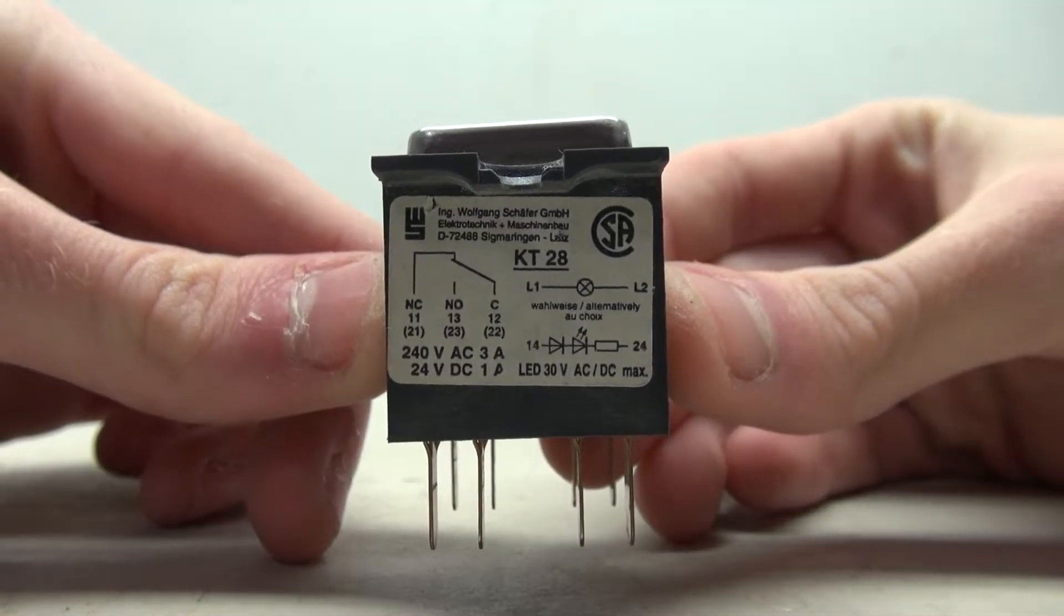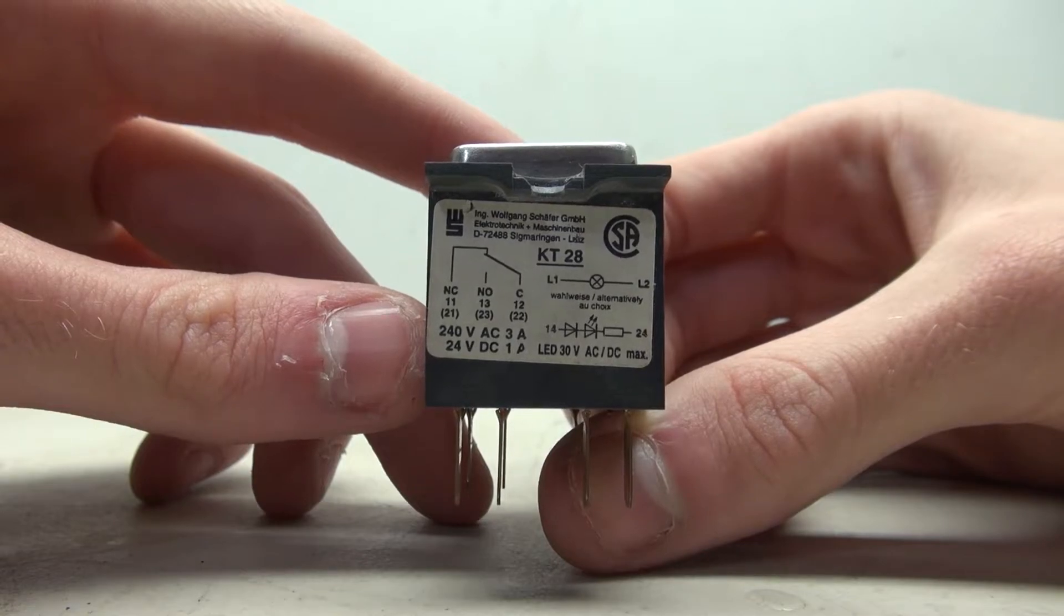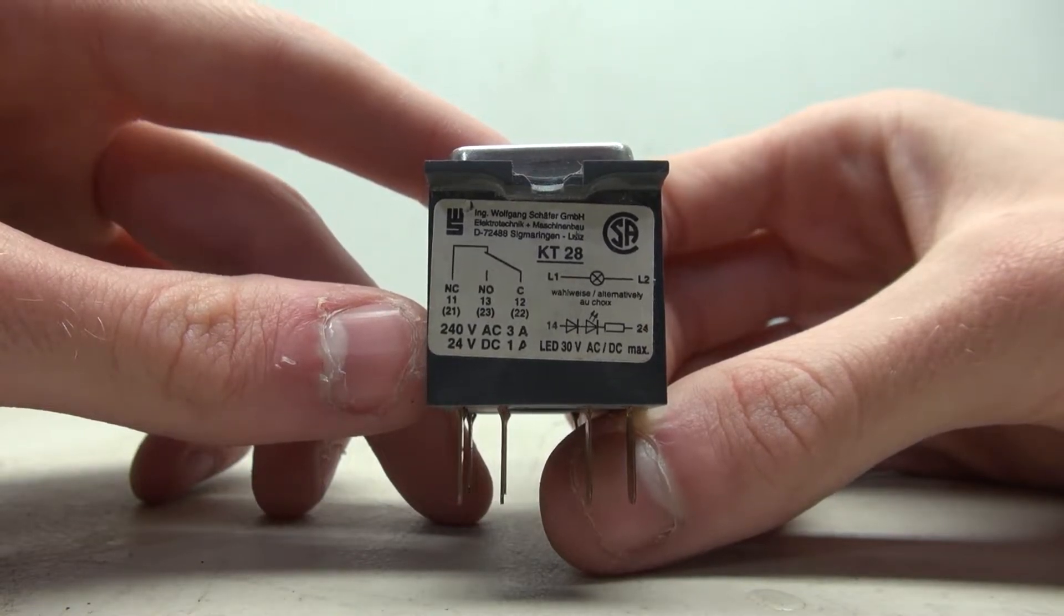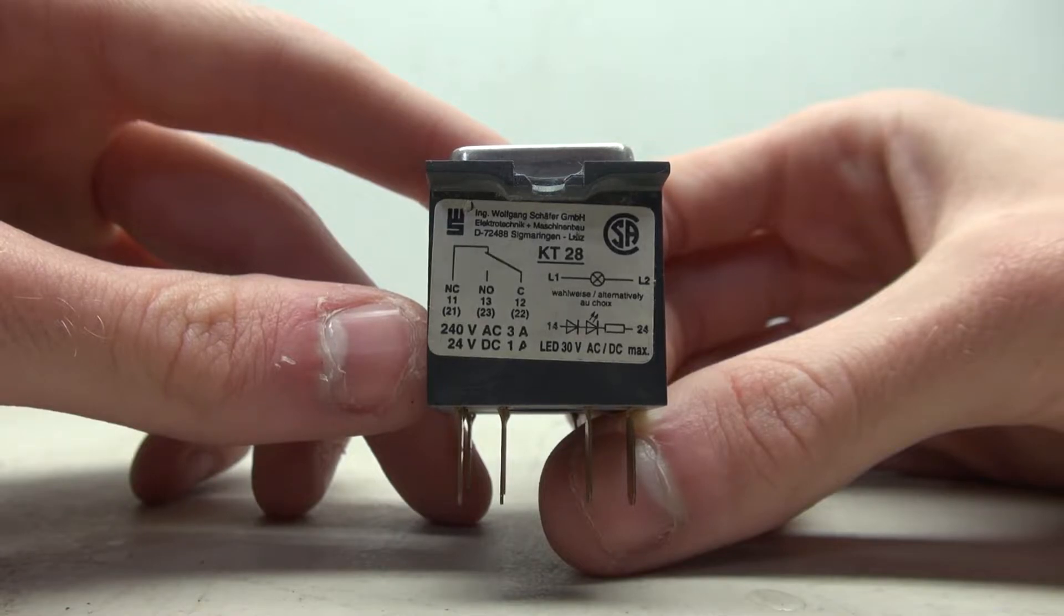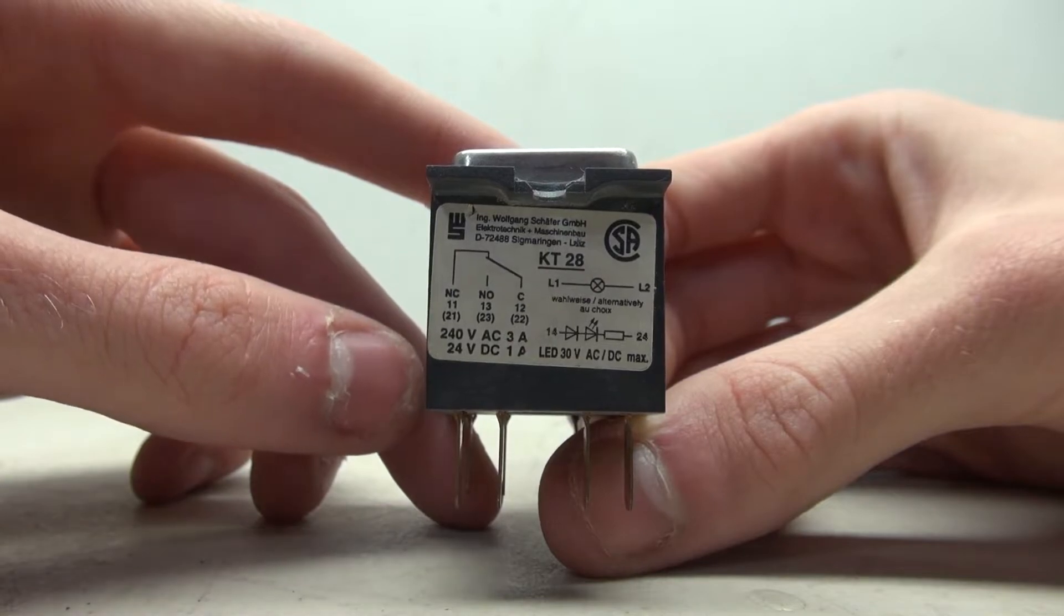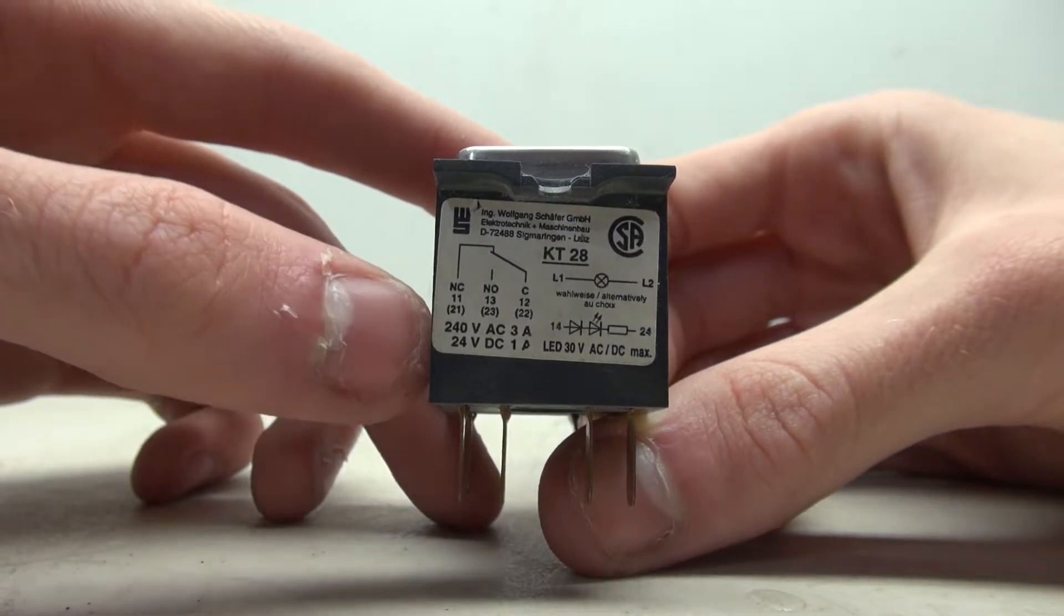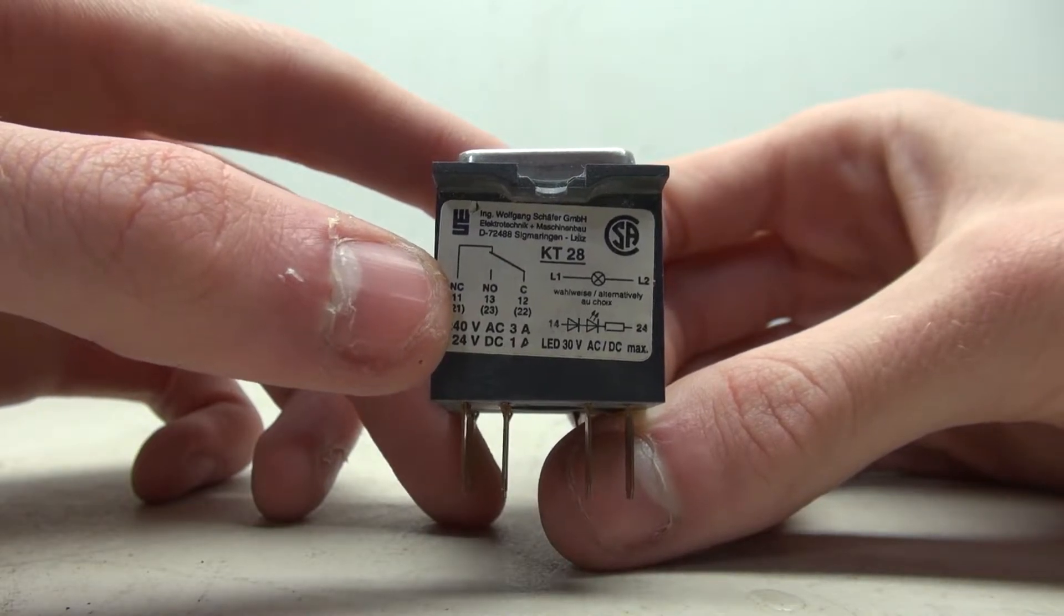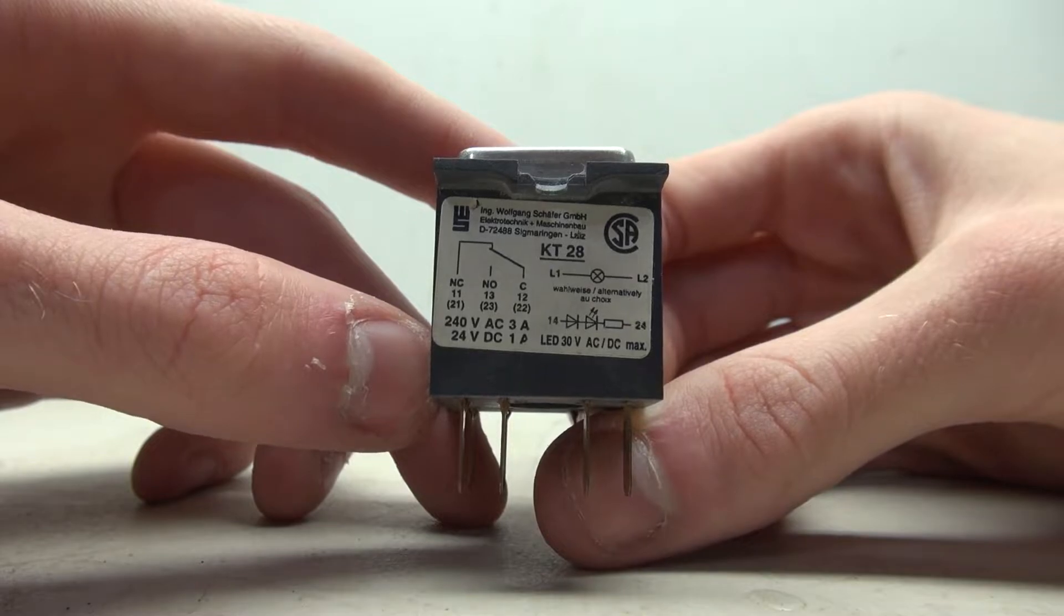This here is the information on the button, specifically this one which is the KT28. Looking on the side shows the information for the wiring and what pins do what. So 11, 21, 13, 23, and 12, 22 correspond to the switch. L1 and L2 are for an incandescent bulb, and 14 and 24 are for an LED. In this case we're not using an incandescent bulb, so we would be using the 14 and 24. It shows that the LED is 30 volts max.